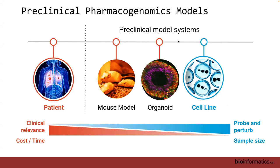Every time you take something from an in vivo system and put it in the lab, you change things. Immortalized cancer cell lines have drifted — they've mutated over time, they grow in dishes with very rich nutrients, which doesn't reflect what happens in a patient's tumor. So even if you find a biomarker that works in cell lines, you're really not sure it will work in the patient. You get a lot of data and the ability to probe and perturb, but it is somewhat irrelevant; and with the patient data, it's super relevant but very small scale.